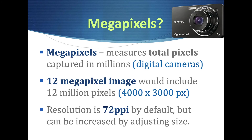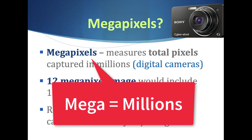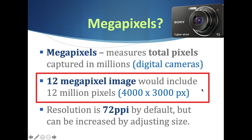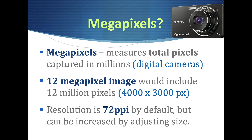Megapixels means millions of pixels. Digital cameras use that measurement because now you can make a picture any size — megapixels just measures how many total pixels are captured. If you're capturing 12 million pixels per shot that's a lot of pixels, so you could make them any size — poster size, small size — you're fine. The resolution is 72 pixels per inch by default but you can adjust it. The important thing is once you have all those pixels you can do whatever you want.